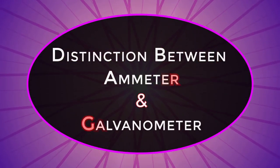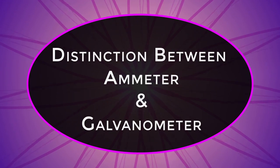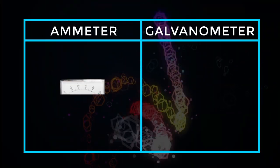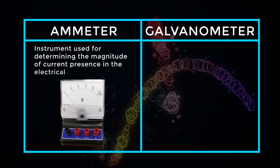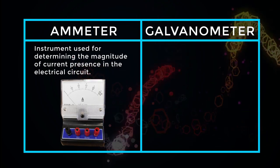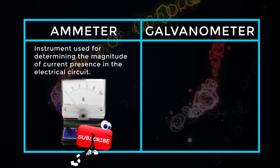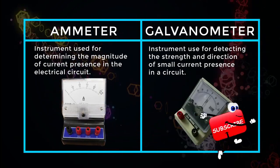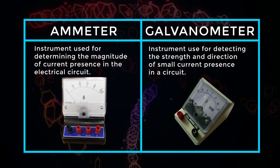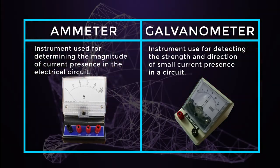Distinction between ammeter and galvanometer. Ammeter is an instrument used for determining the magnitude of current presence in the electrical circuit, whereas galvanometer is used for detecting the strength and direction of small current presence in a circuit.